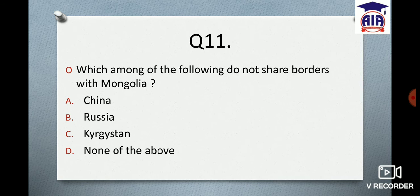Next question: Which among the following does NOT share a border with Mongolia? Option A: China. Option B: Russia. Option C: Kyrgyzstan. Option D: None of the above. We were covering the map-based series, so this is important — know who is sharing borders, especially these locations. China is always important.